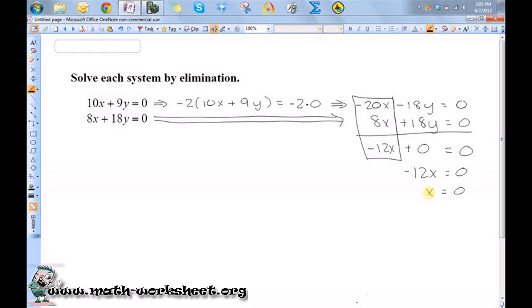So now all you need to do is plug x into one of these equations. I'll just plug it into the first one. So 10x plus 9y is equal to 0. So 10 times 0 plus 9y is equal to 0. So 9y is equal to 0, which means y is equal to 0.